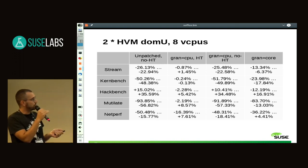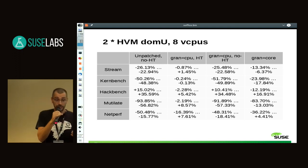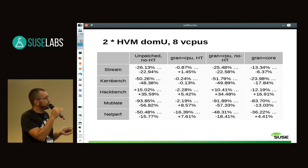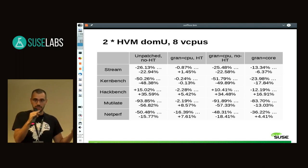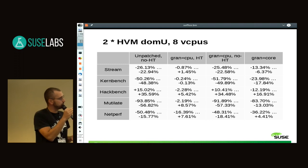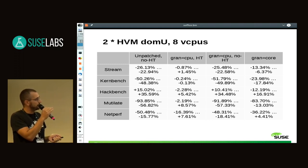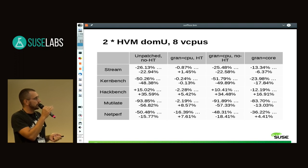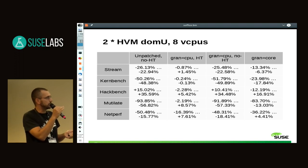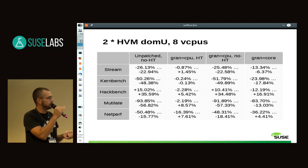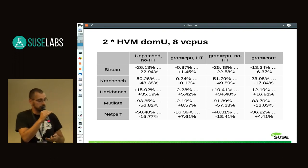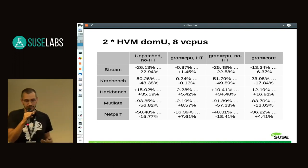In the over-committed scenario — two VMs with eight vCPUs each on an eight physical CPU host — core scheduling looks quite good. In nearly all benchmarks except Hackbench, core scheduling impacts performance less than disabling hyper-threading. Even workloads like Stream and NetPerf that performed poorly with core scheduling in the non-overcommitted case behave well here. In an over-committed scenario, core scheduling is almost always better than disabling hyper-threading.